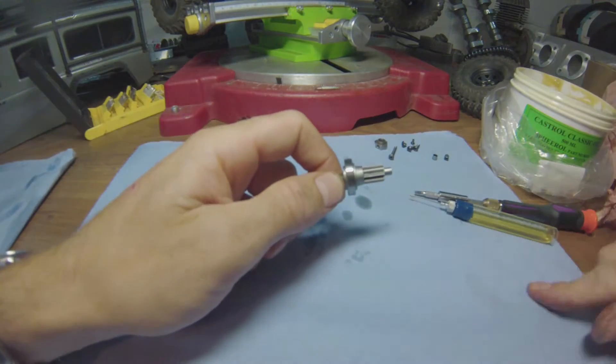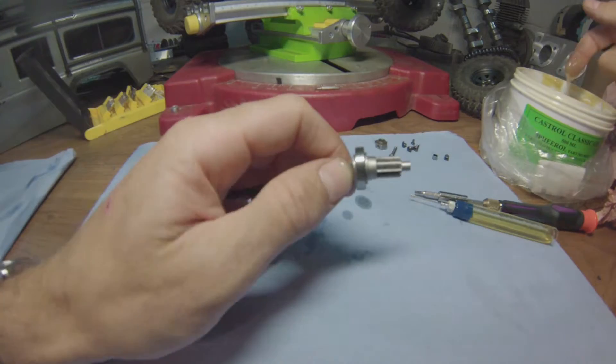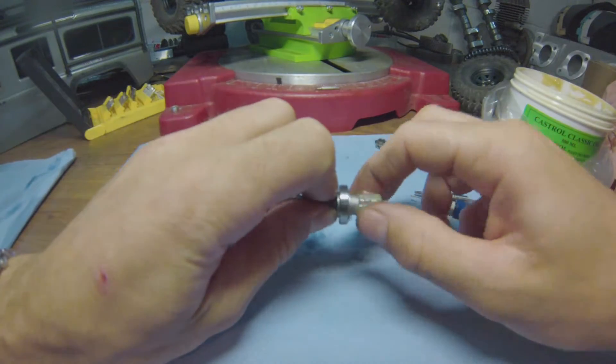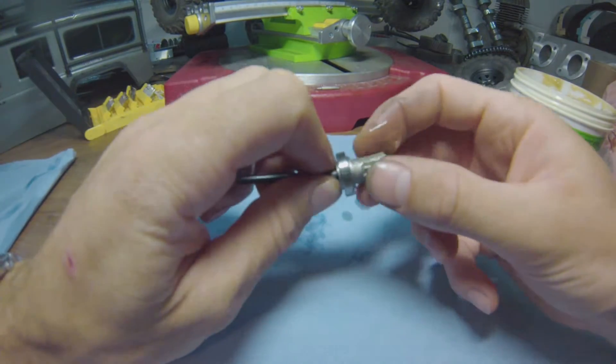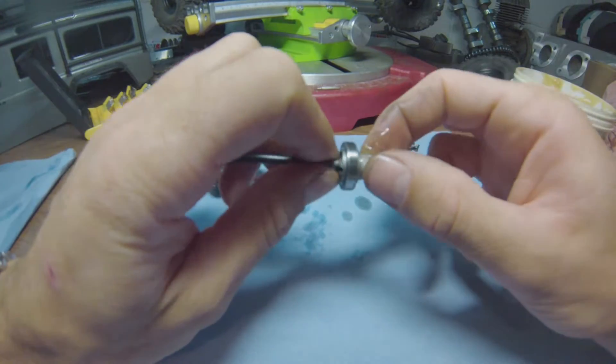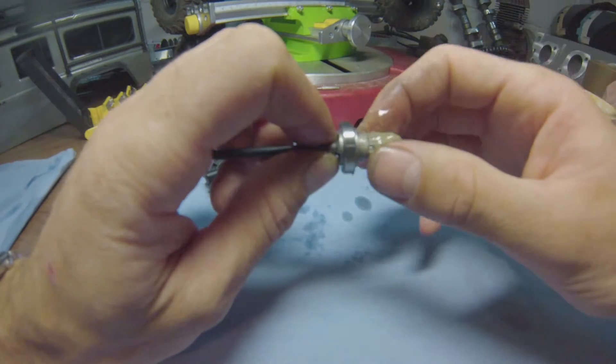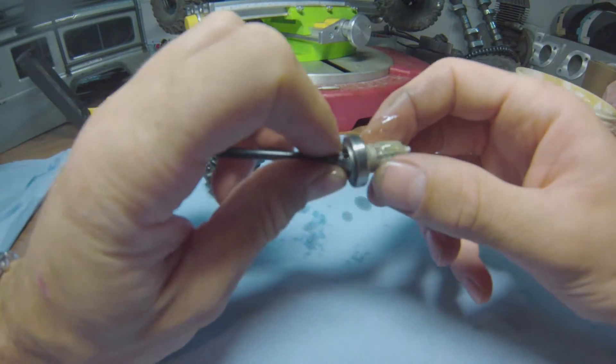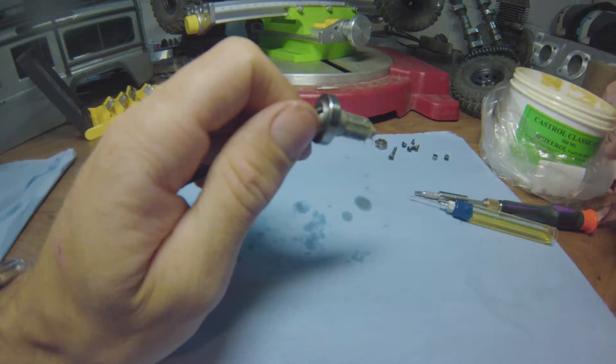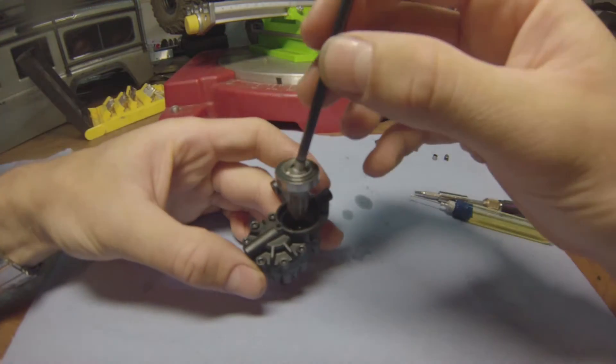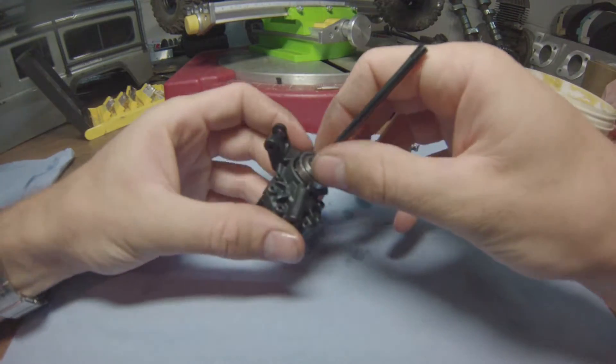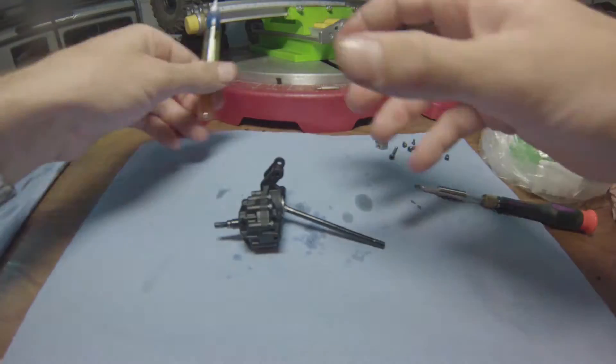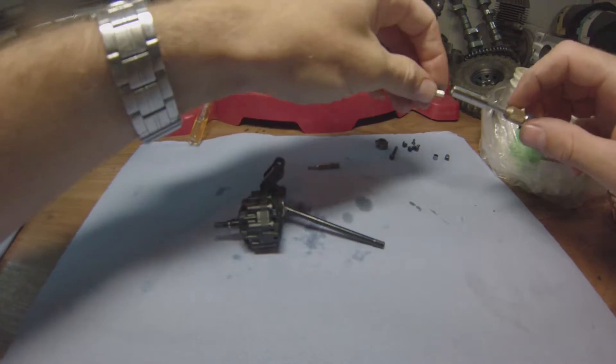And again, make sure that your hands are very clean, and make sure to fill all the teeth with this grease here. As you can see, it's pretty fluid grease, so it doesn't offer that much of a resistance, but it does lube everything up very nicely. Makes it operate smoothly.